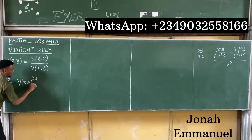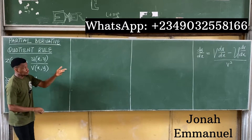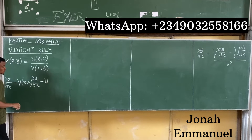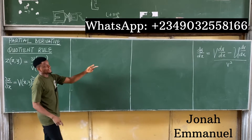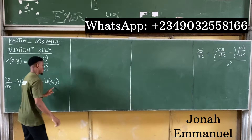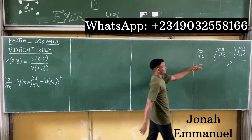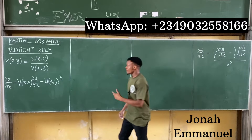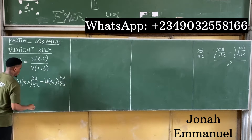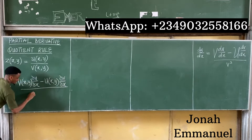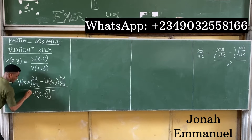...minus u(x,y) times ∂v/∂x, all over v(x,y) squared. So this is the formula for ∂z/∂x when z = u(x,y)/v(x,y).